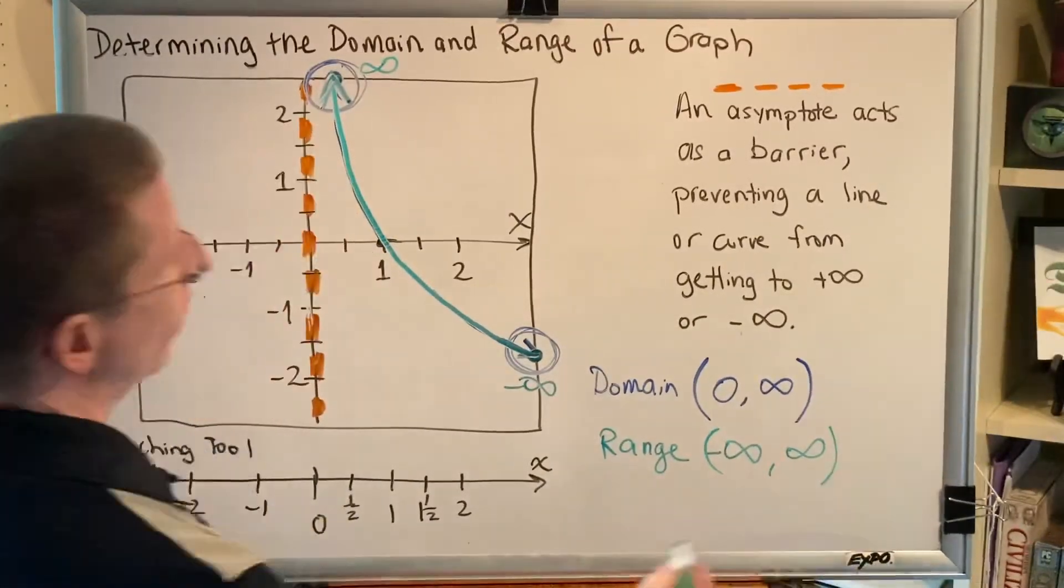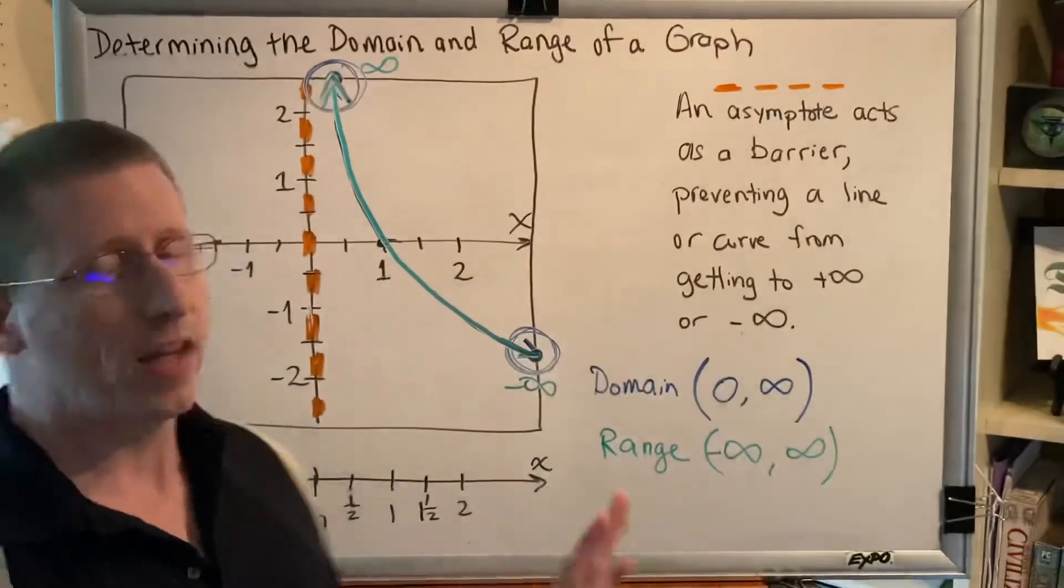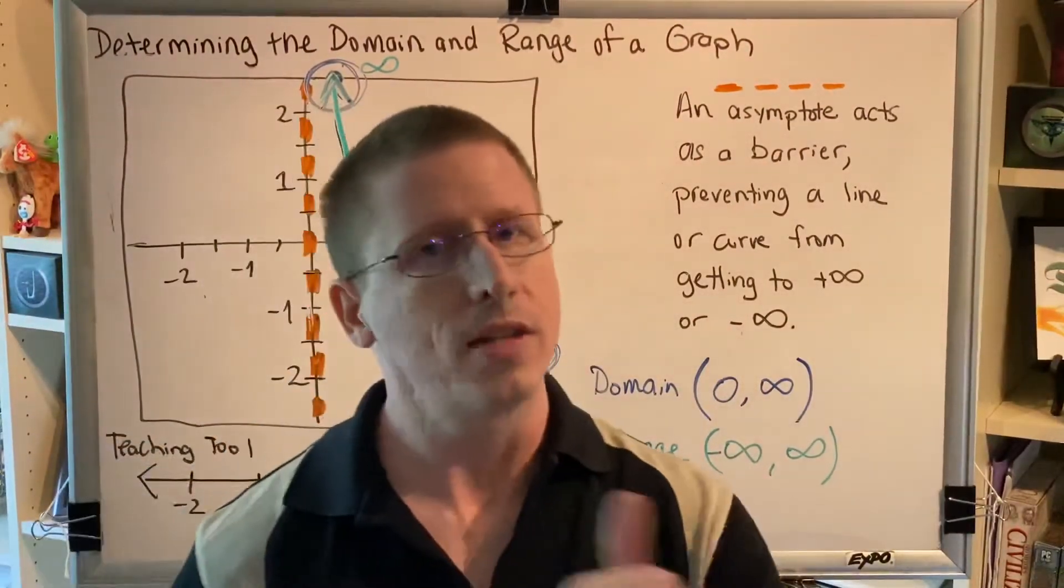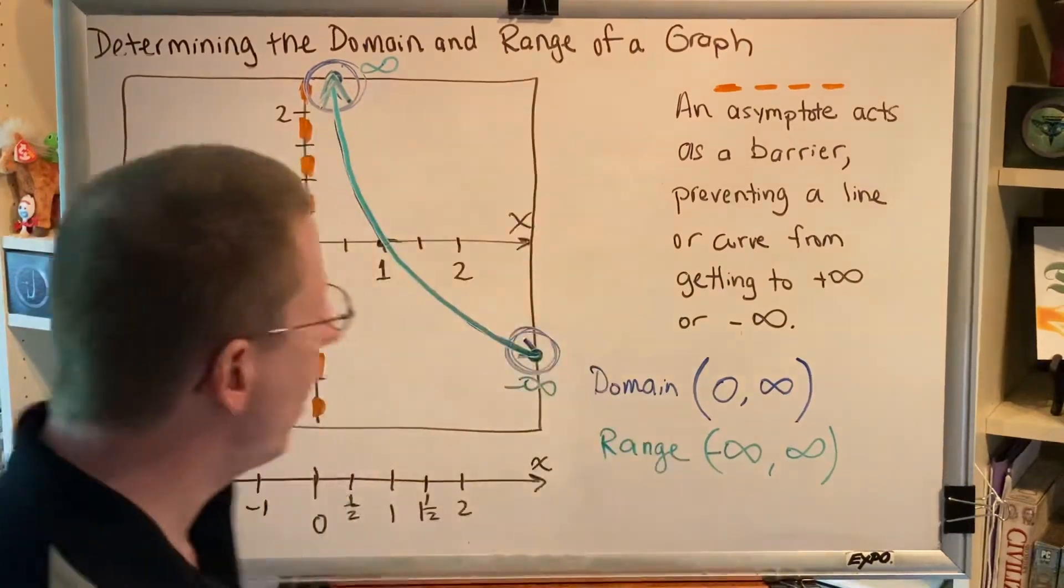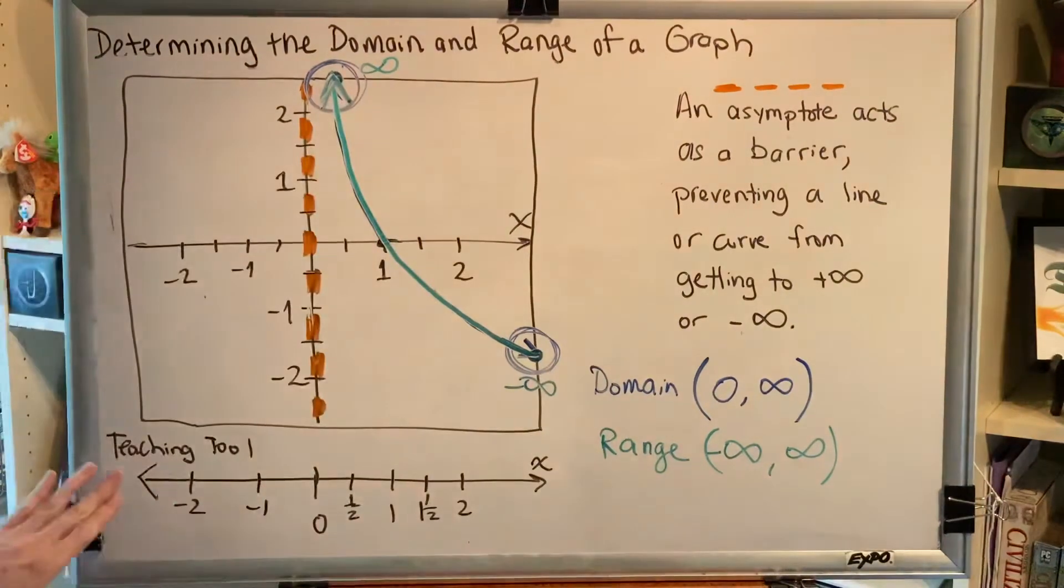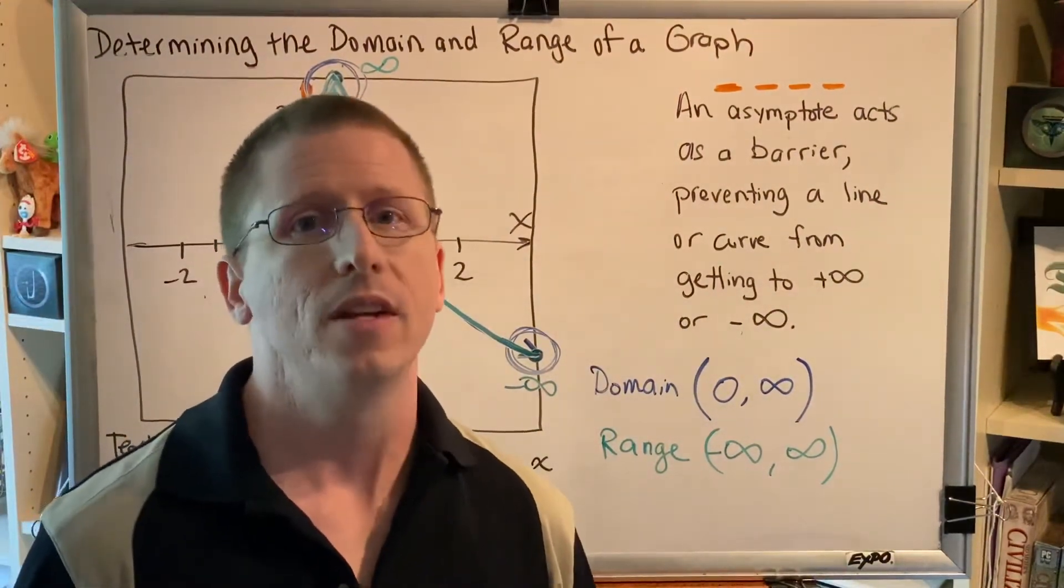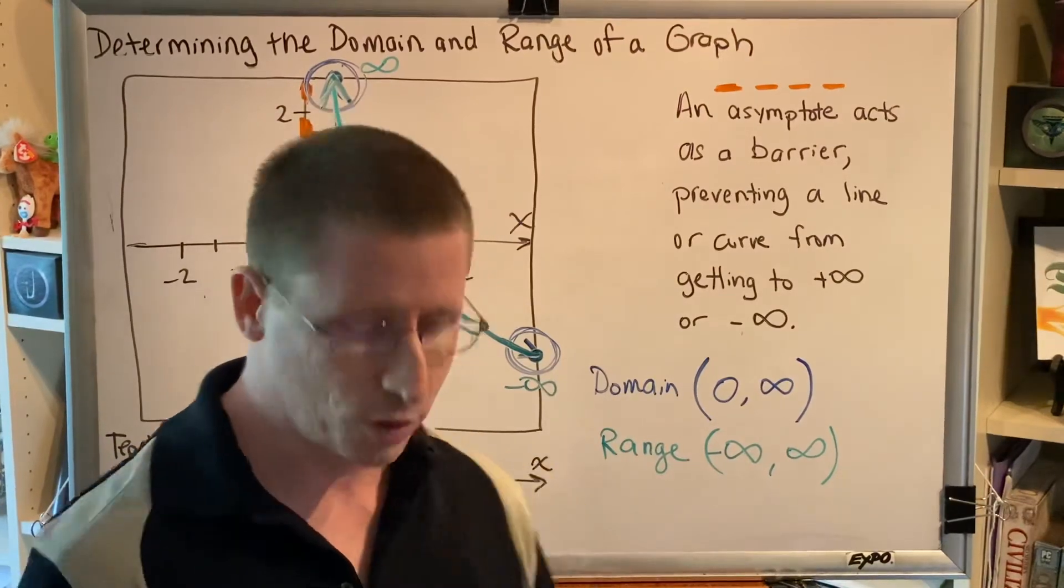So our range is negative infinity comma infinity. Now if everything I just said made perfect sense to you, you can stop this video now, but if you're still having trouble understanding why is it zero, then let's use this teaching tool that I shared with you earlier in this video series to help you understand this concept.